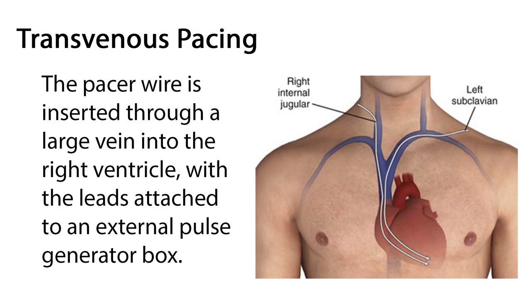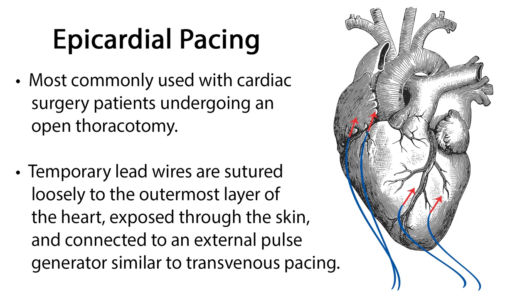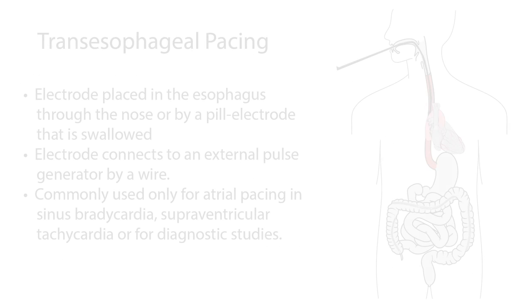With a transvenous pacemaker, the pacer wire is inserted through a large vein into the right ventricle with the leads attached to an external pulse generator box. Epicardial pacing is most commonly used with cardiac surgery patients undergoing an open thoracotomy. Temporary lead wires are sutured loosely to the outermost layer of the heart, exposed through the skin, and connected to an external pulse generator similar to transvenous pacing.